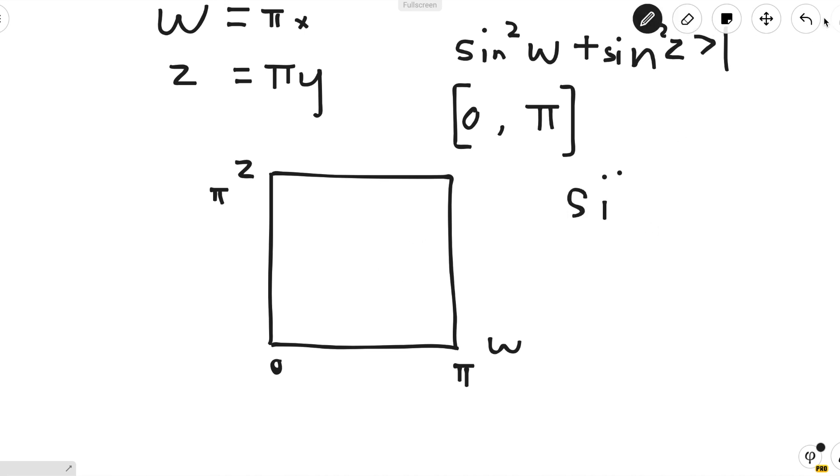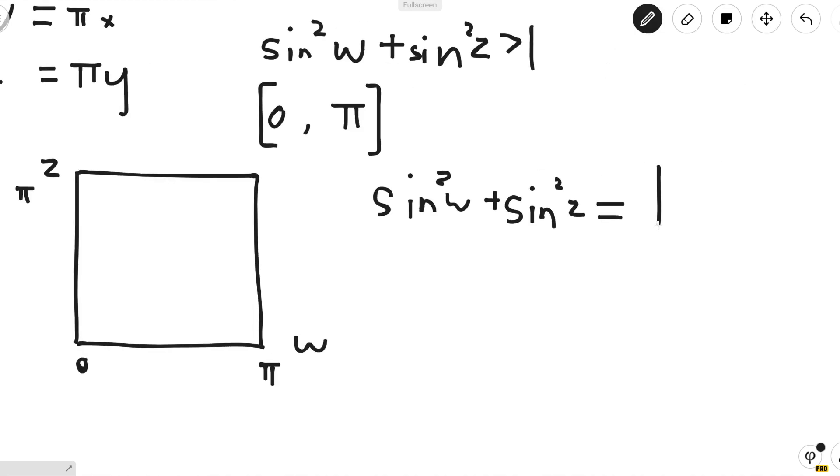The boundary of the region would just be when sin²w + sin²z = 1. And to solve for this region, we want to find z in terms of w.